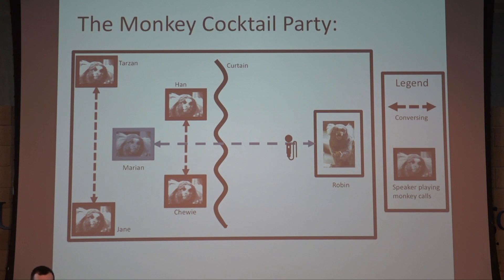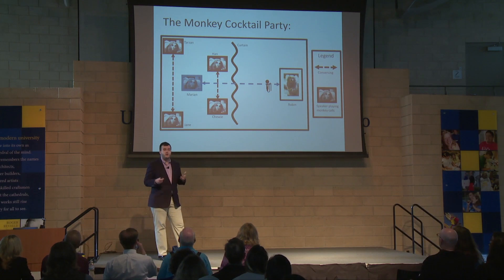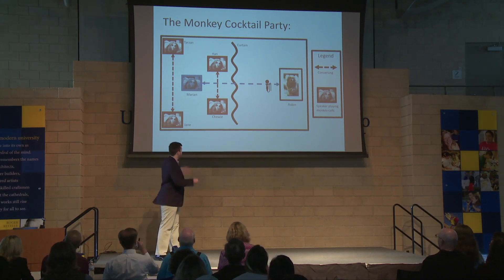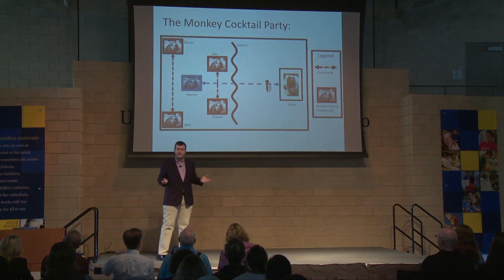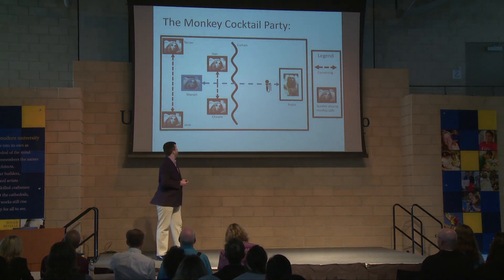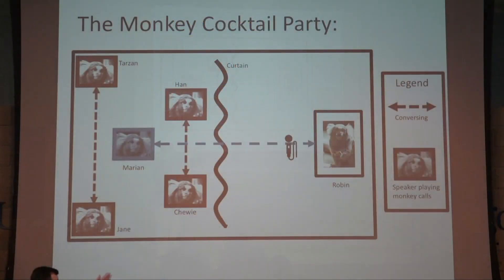The common marmoset is a small vocal monkey from Brazil. It loves to talk back and forth ad nauseam with each other, much like some humans do in their own conversations. This makes them ideal candidates for animal models in vocal communication research. If I just take previously recorded conversations of these monkeys and play them in a room, I've basically created a monkey cocktail party. This is diagrammed here with Robin the subject and Marion the target.